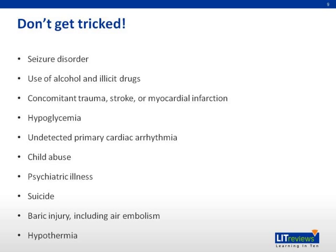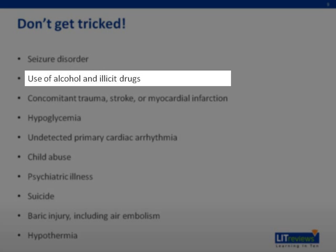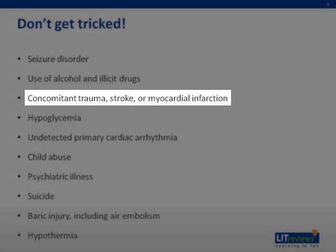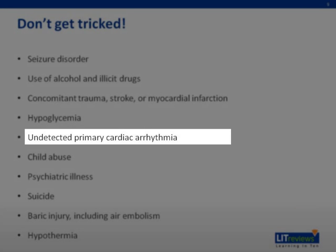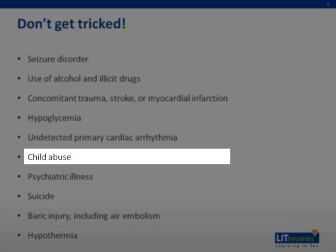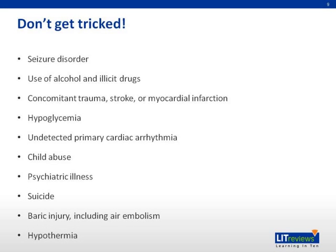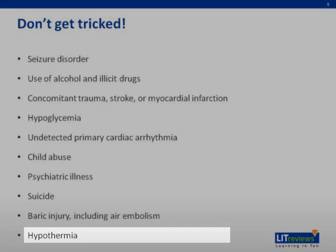This is probably the most important consideration. We must also think of other comorbid conditions when these patients present. They might have had a seizure, used alcohol or other forms of drugs, or suffered some trauma, stroke, or MI. They could be hyperglycemic, either as an initial presentation leading to their near-drowning, or as a consequence of the episode. They could have a primary cardiac arrhythmia. We should also think of child abuse, any psychiatric illness, or whether this was a suicide attempt. Other injuries that can be present include barotrauma, especially if they were swimming in pressurized conditions, and we should also think of hypothermia.